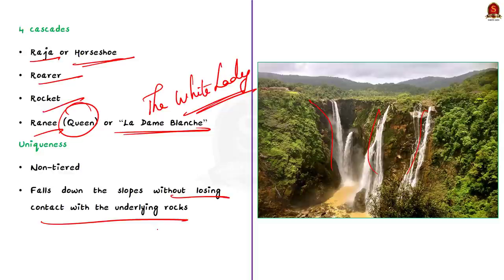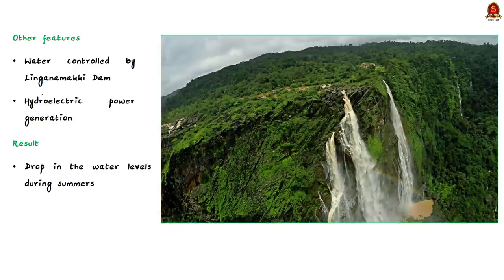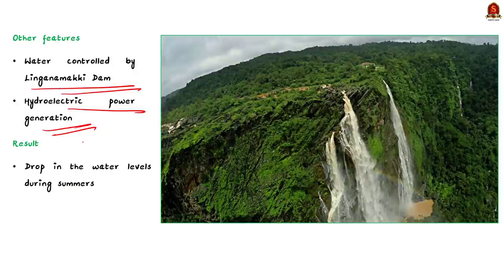The Sharavathi River rises in the Western Ghats in the small town of Ambutirtha in the Shivamoga district. The river flows over rocky terrain and gives a powerful plunge downwards, splitting into four separate cascades known as Raja, Rani, Rover, and Rocket — colloquially called Raja or Horseshoe, Roarer, Rocket, and Rani or 'La Dame Blanche' (the White Lady). These names are based on the unique characteristics of each cascade. The river water flowing to Jog Falls is controlled by the Linganamakki Dam, built for hydroelectric power generation, causing water levels to drop in drier seasons.